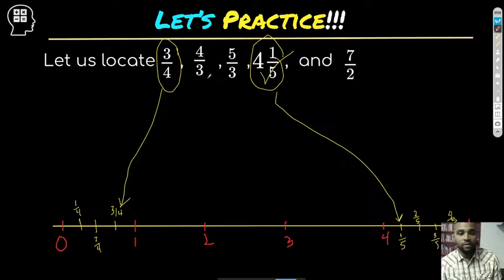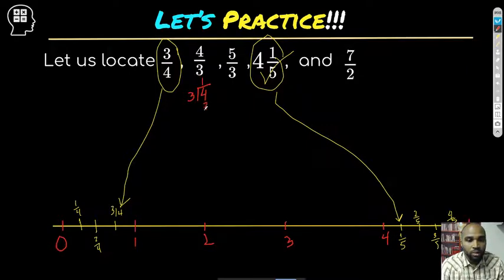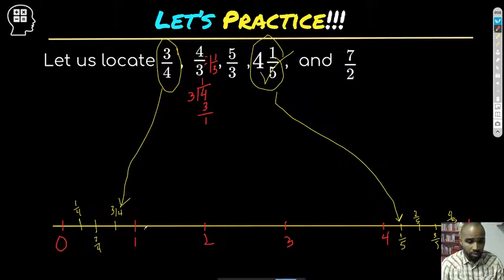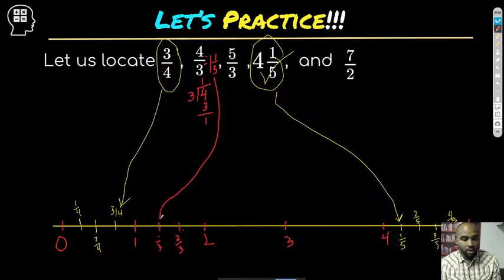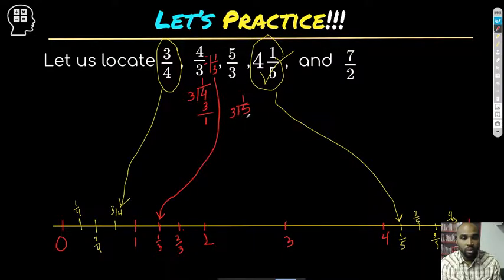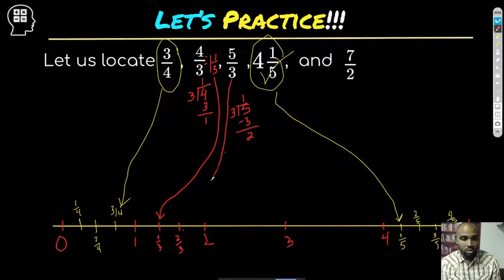Now we have the improper fractions left. Four divided by three: one times three is three, four minus three is one — that gives us one and one third. So we divide the space between one and two into thirds: one third, two thirds, three thirds. One and one third is right at that first one-third mark. Five thirds also converts: three times one is three, so that's one and two thirds — which is the second mark.